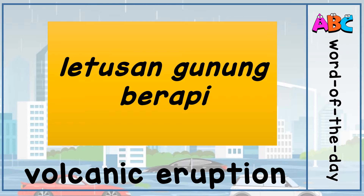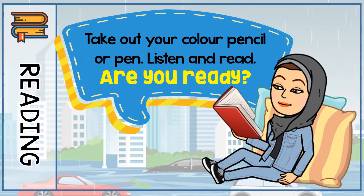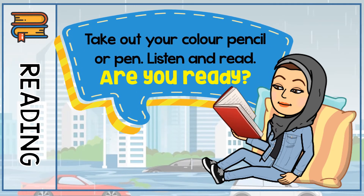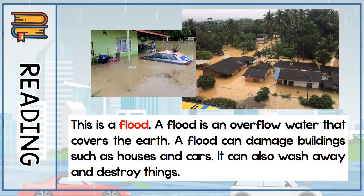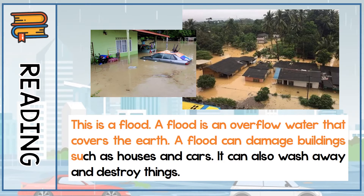Now we can begin our lesson. Take out your colour pencil or pen. Listen and read. Are you ready? Have you taken out your colour pencil? Very good. Now follow me. This is a flood. A flood is an overflow of water that covers the earth. A flood can damage buildings such as houses and cars.